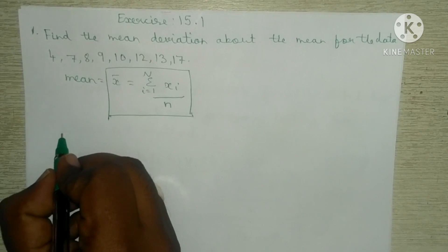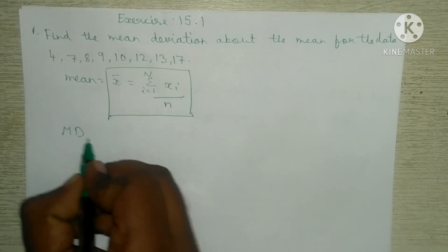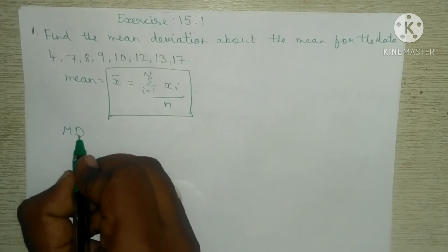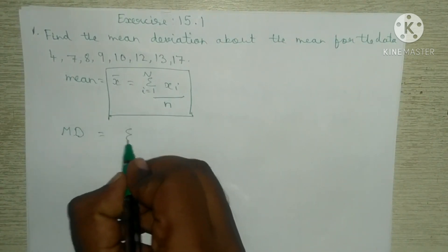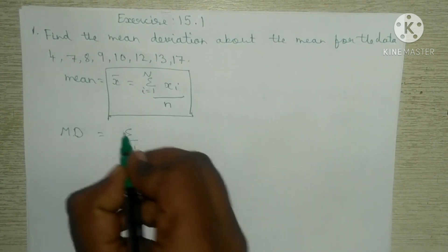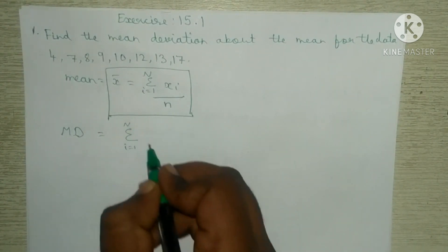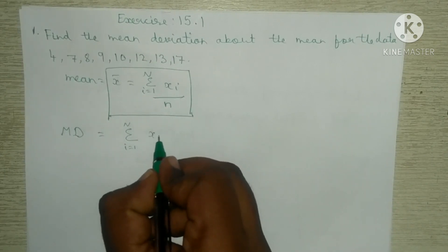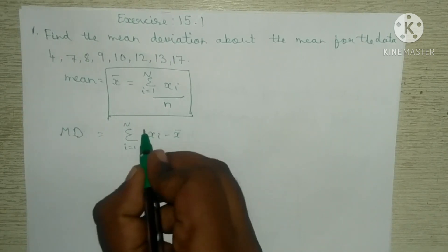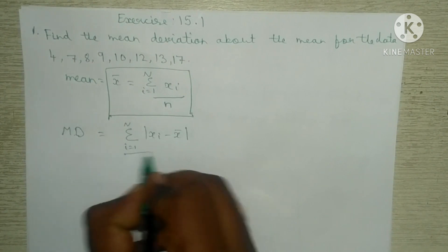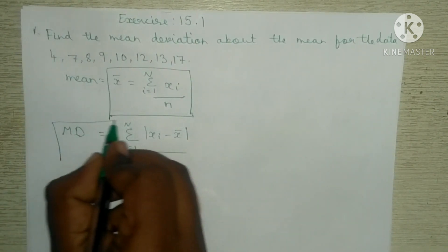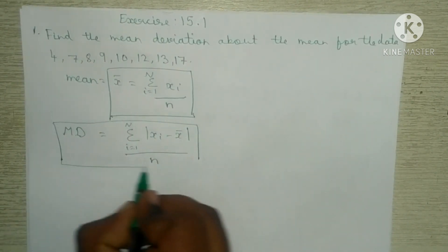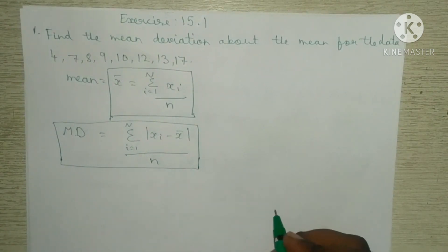Then the mean deviation formula: MD, mean deviation, is equal to summation from i = 1 to n of |x_i minus x-bar|, all divided by n. This is the mean deviation formula. These two formulas are used in the first question.